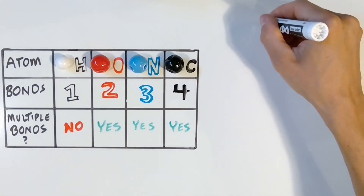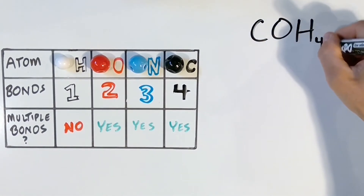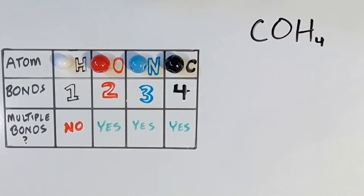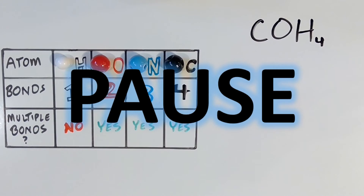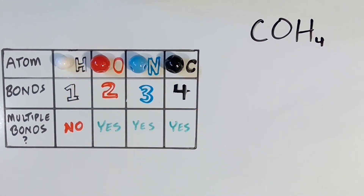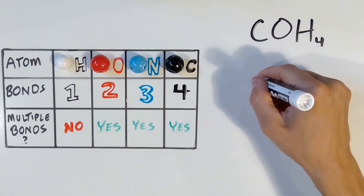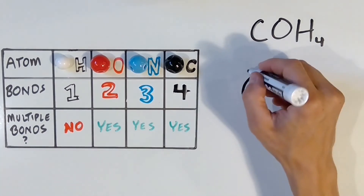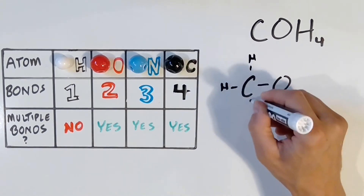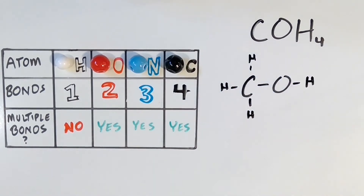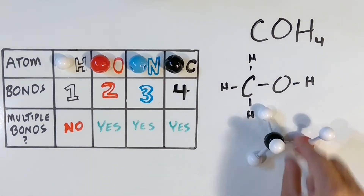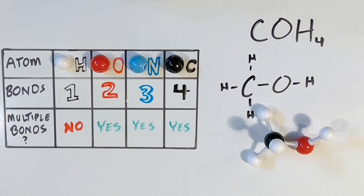This is the molecular formula for what is called methanol, COH4. Can you find out how a molecule of methanol is arranged? Pause the video and see if you can determine how this molecule is put together. Methanol is built like this. Notice that this molecule obeys our bonding rules — each hydrogen has one bond, oxygen has two bonds, and carbon is bonded four times.